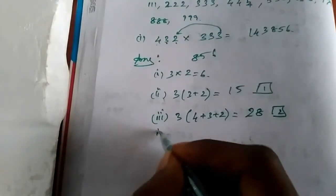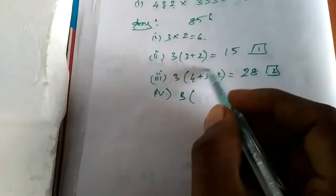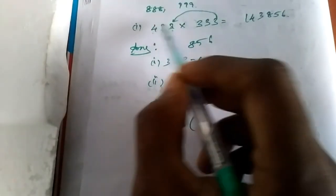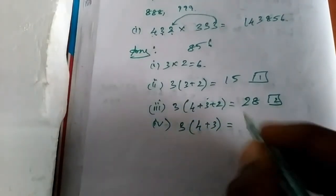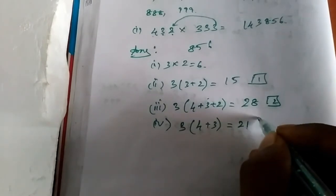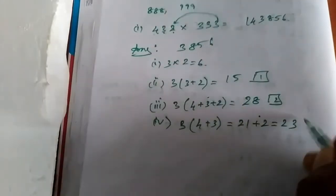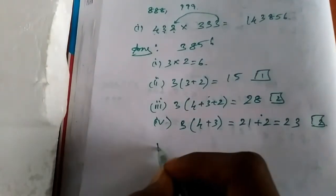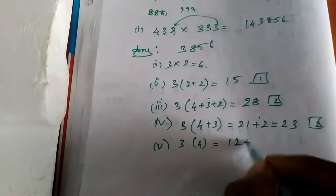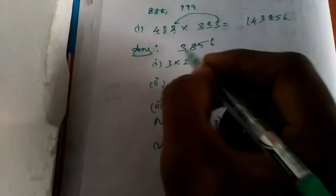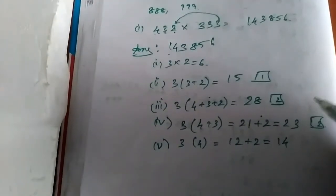Third step: three into four, plus three, plus two equals — nine, three sevens are twenty-seven. Twenty-seven plus one equals twenty-eight — two in the memory, eight noted. Fourth step: three into one, four plus three equals seven, three sevens are twenty-one. Twenty-one plus two equals twenty-three — three noted, two in the memory. Final step: three into four equals twelve, twelve plus two equals fourteen. Answer: one, four, three, eight, five, six — answer correct.